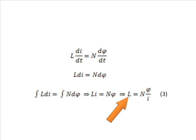From the above expression, inductance can also be defined as: if the current I through N turn coil produces a flux of φ Weber, then its self inductance would be L.